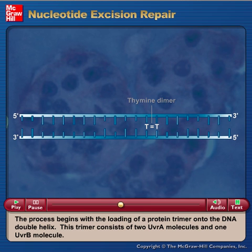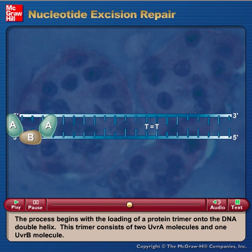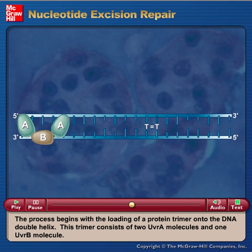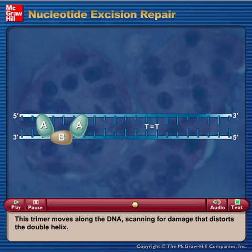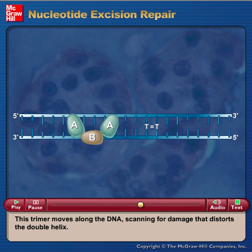The process begins with the loading of a protein trimer onto the DNA double helix. This trimer consists of two UVRA molecules and one UVRB molecule. The trimer moves along the DNA, scanning for damage that distorts the double helix.